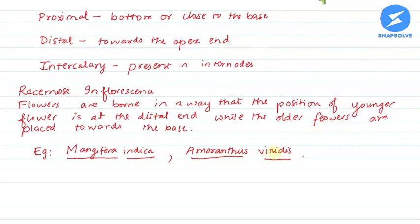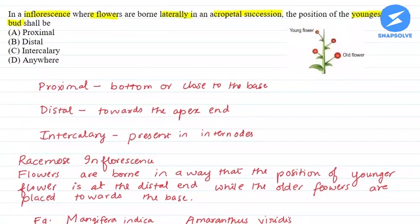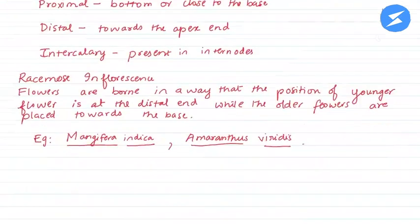So these were two examples of racemose inflorescence. Now we have got the answer. The right option will be option B, distal. Therefore, the right option is B, distal.